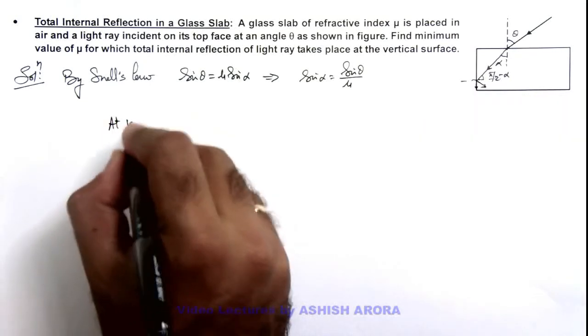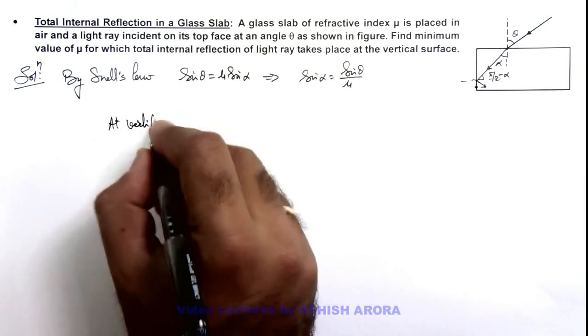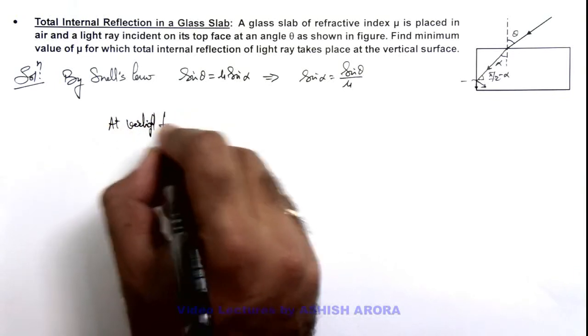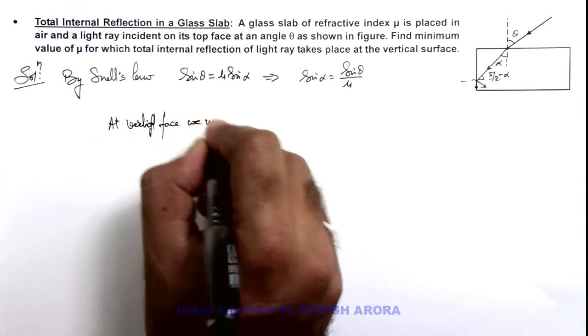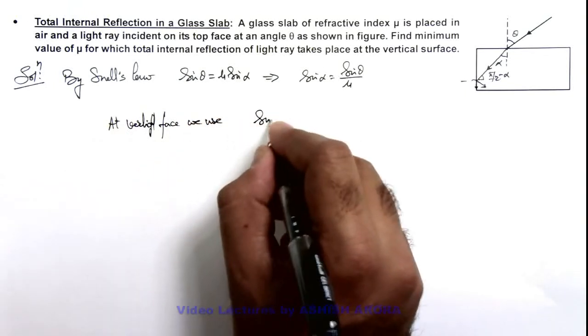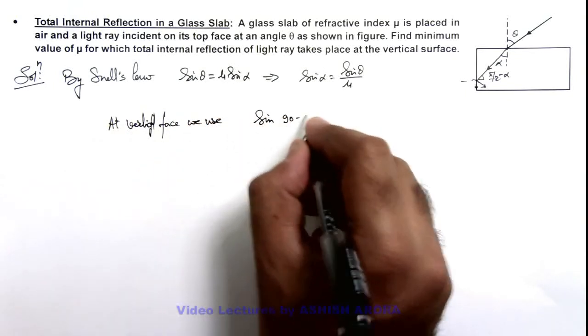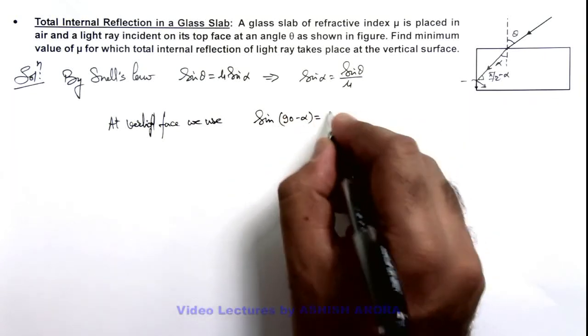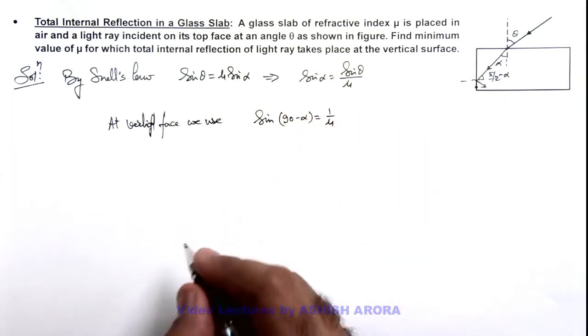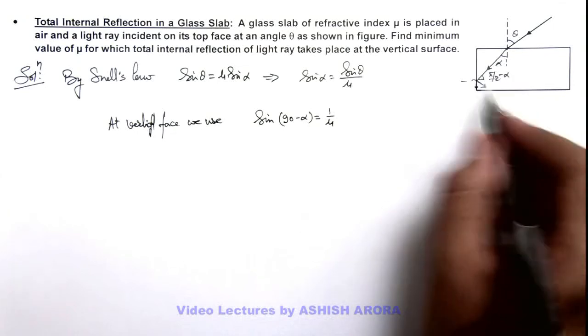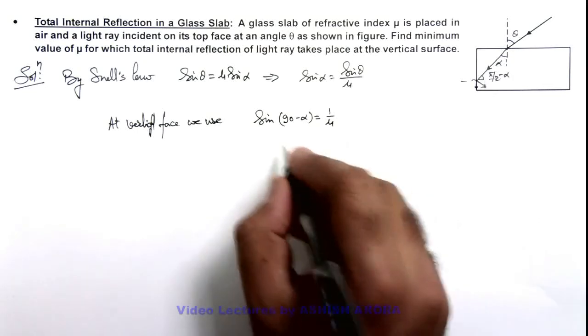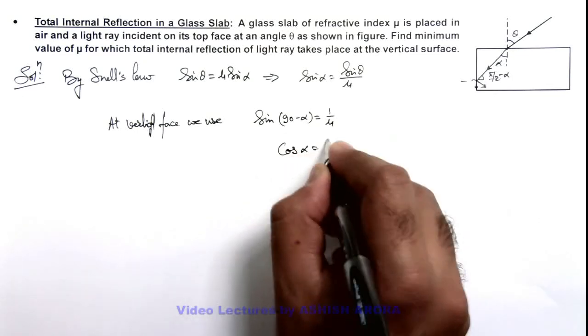So we can write at vertical face we use again sine of 90 minus alpha. We can write it as 1 by mu, because this 90 minus alpha should be the critical angle. So this gives cos alpha is equal to 1 by mu.